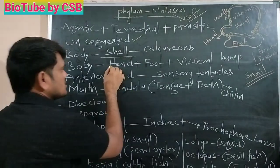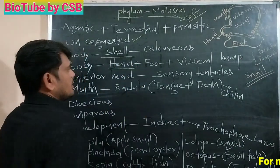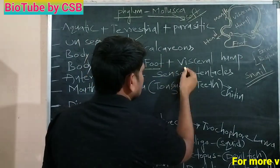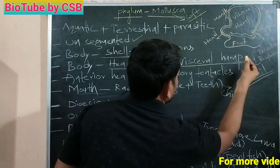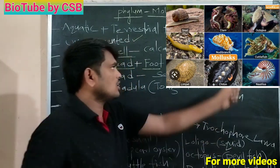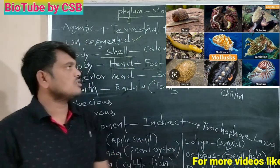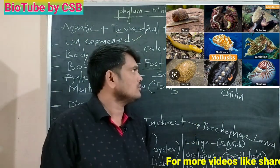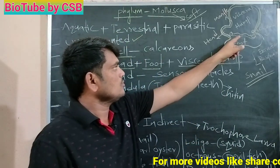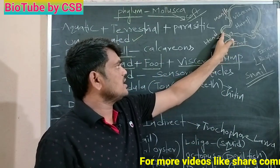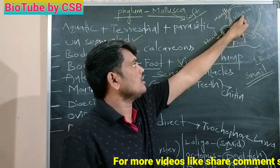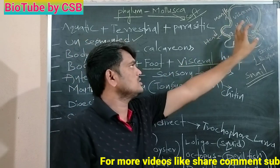The body is divided into three portions: the head region, foot, and visceral hump. You can observe the diagram of the snail on screen — head region, foot, and visceral hump.